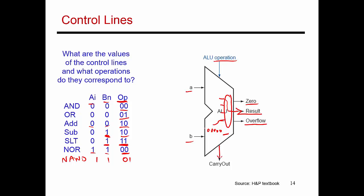So for set on less than, I need a new operation code, but what I'm essentially doing is a subtraction of B from A.